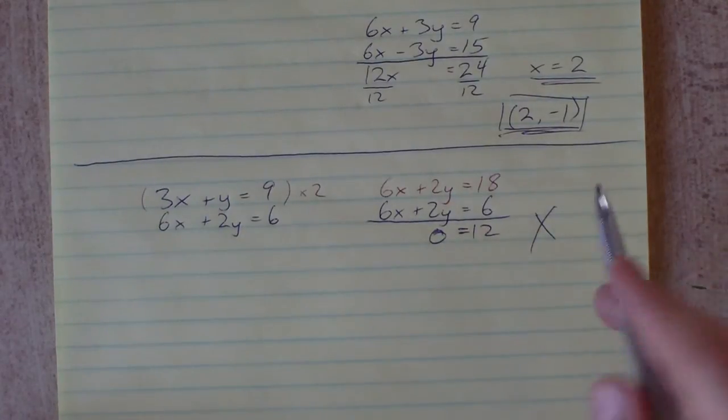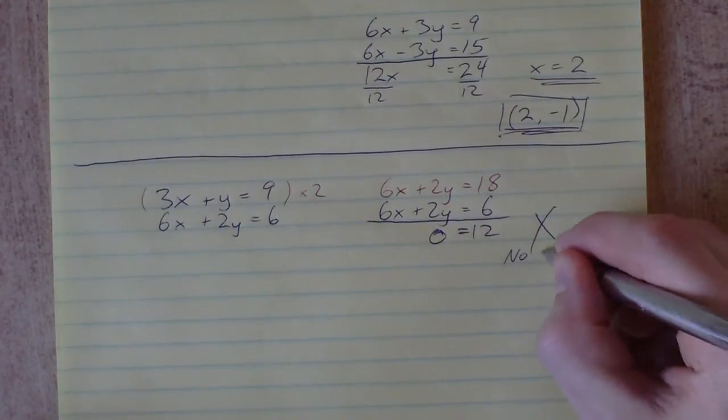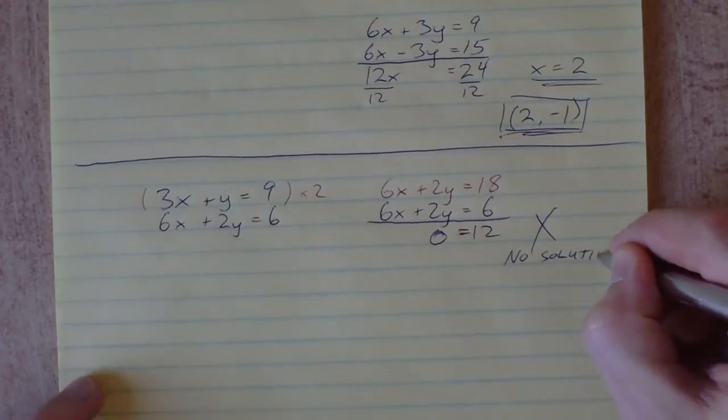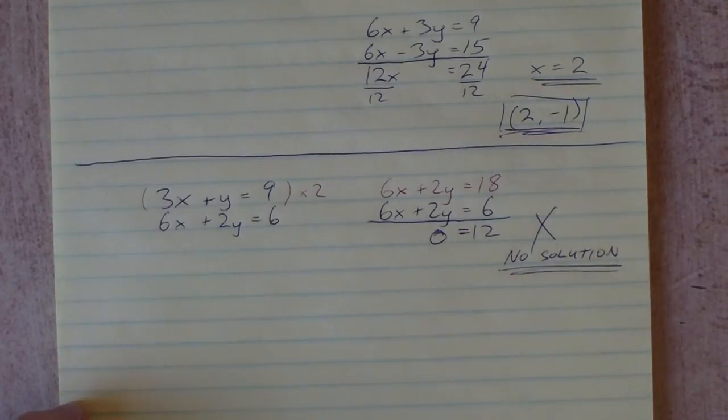Obviously that doesn't work. If we end up with this situation, we say there is no solution. Doing it algebraically, we see there's no solution because we can't have 0 equals 12.